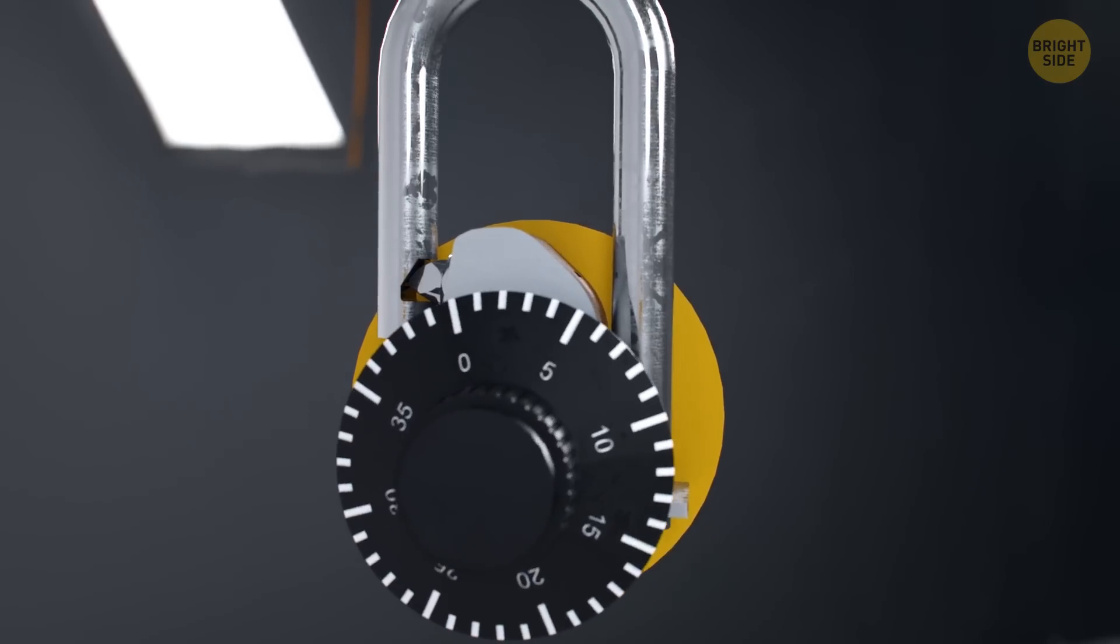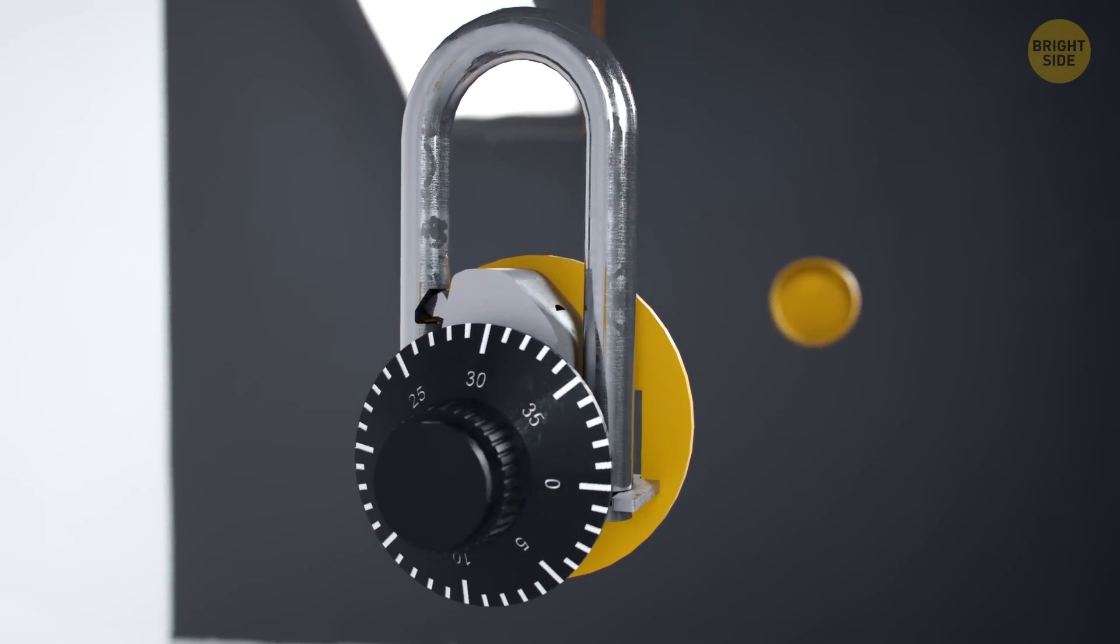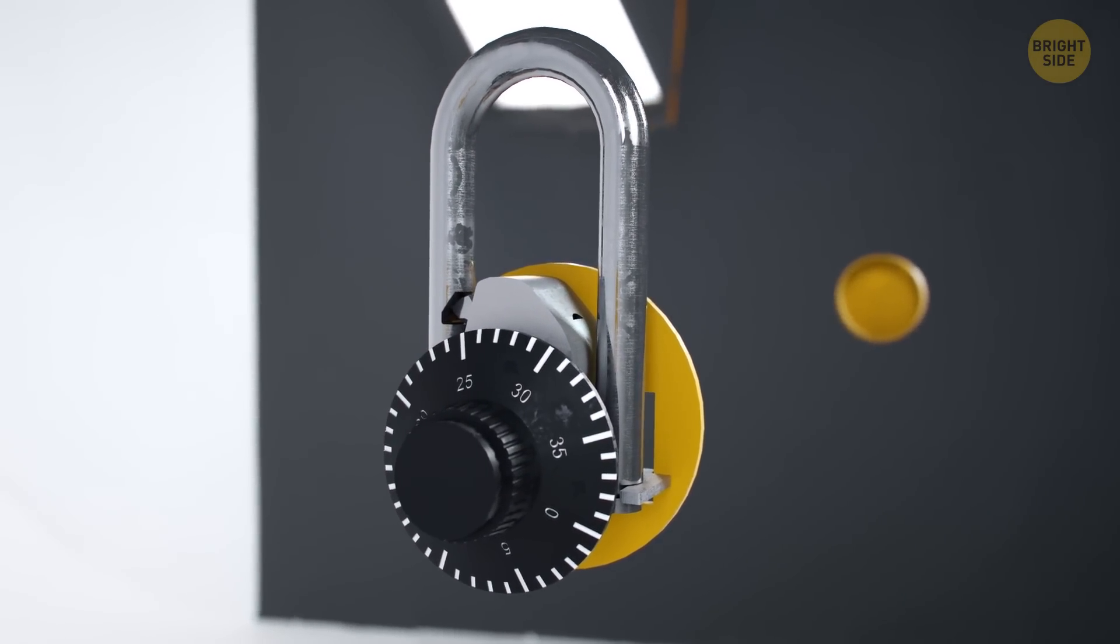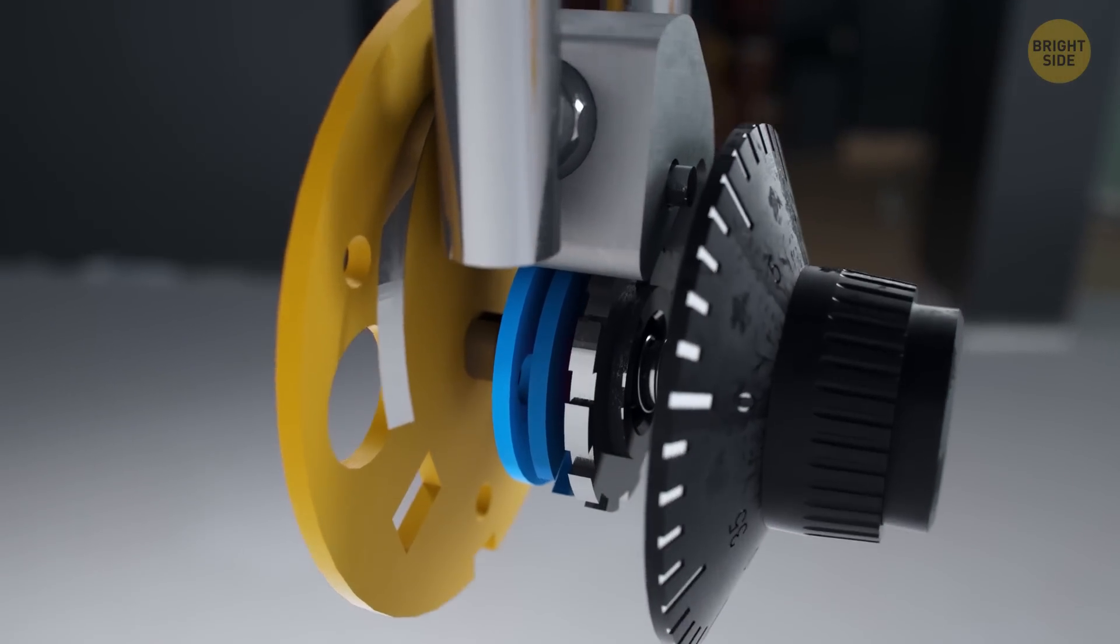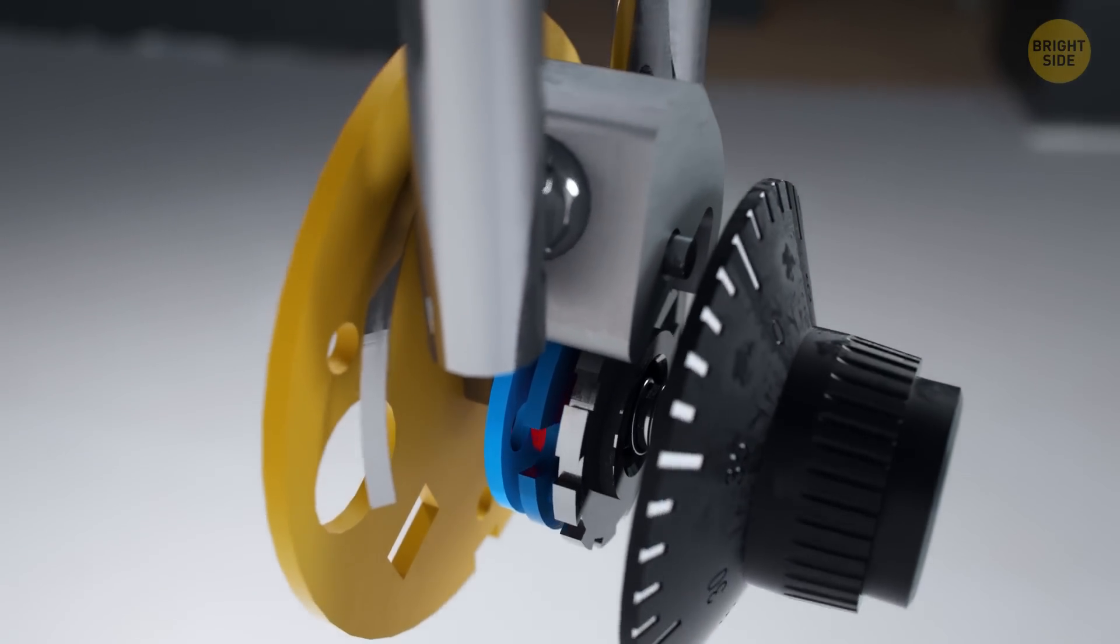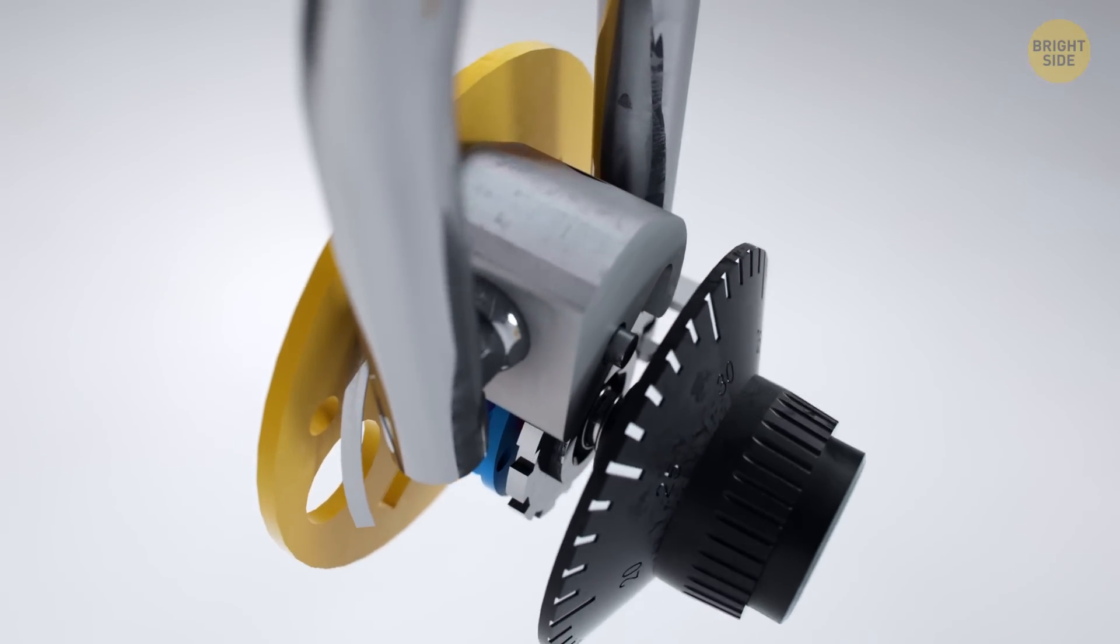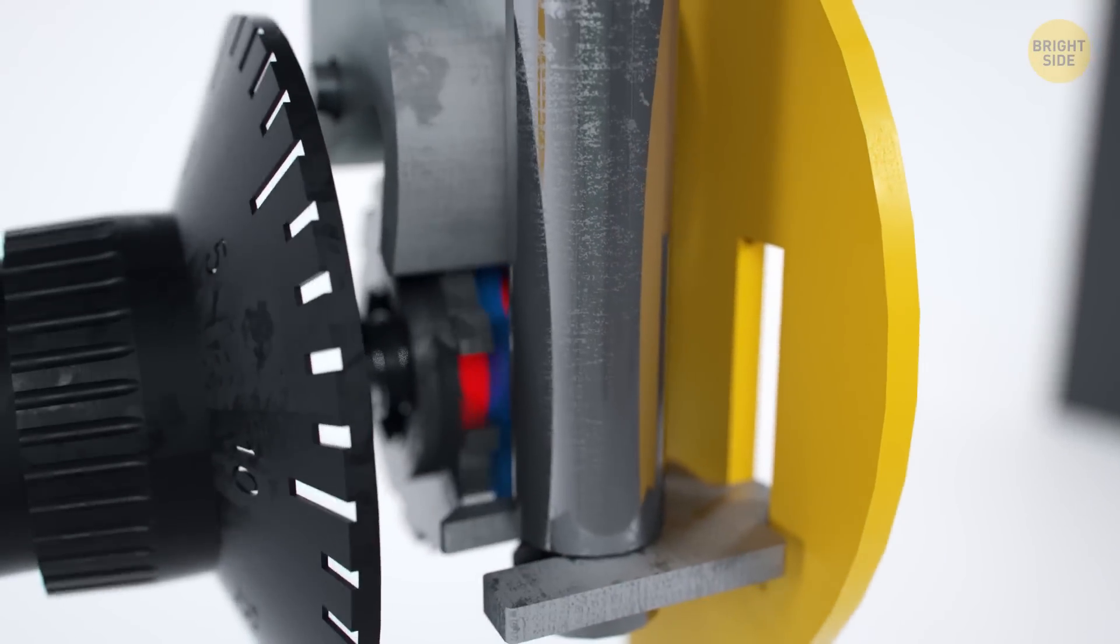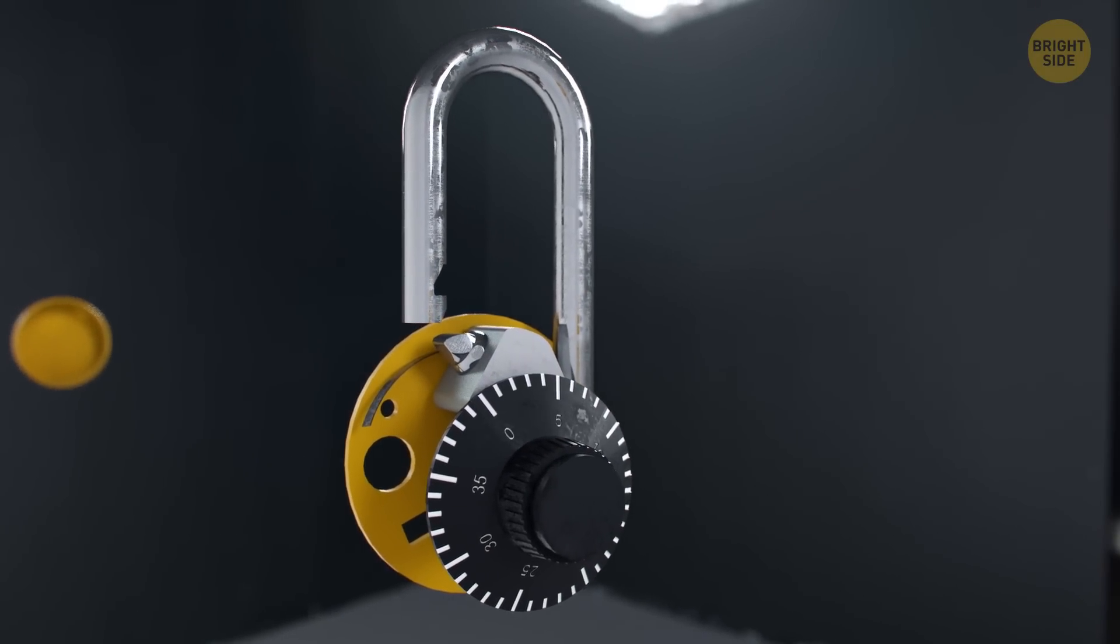If the lock clicks at every digit, you are pushing the shackle too hard. If there's no click in a full circle, you're not pushing hard enough. Once you know the first number, start turning the wheel in the opposite direction. The rules are the same – light pressure and slow rotation. Write down the second number. Now slowly turn the dial wheel in the opposite direction. Once disc number 1 is in position, the lock will open. And so ends the lesson for Safe Cracking 101.